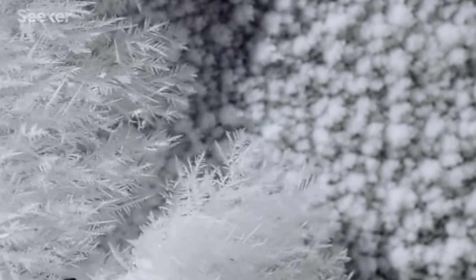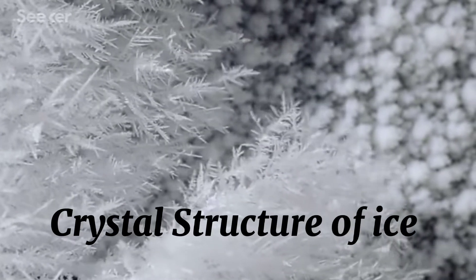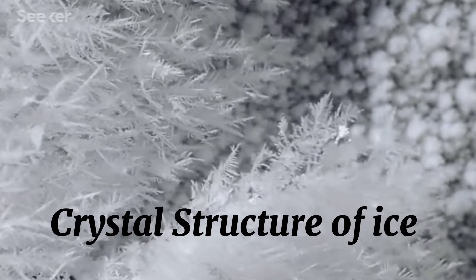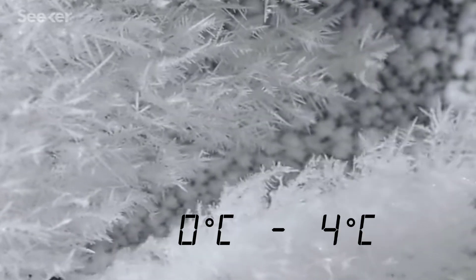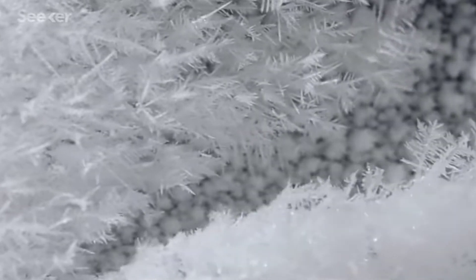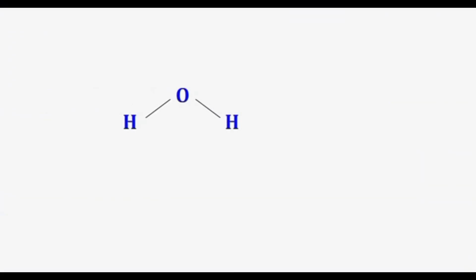The most interesting impact of hydrogen bonding is observed in the crystal structure of ice, which causes water to behave abnormally from 0 to 4 degrees centigrade. The crystal structure of ice shows a tetrahedral arrangement of water molecules.